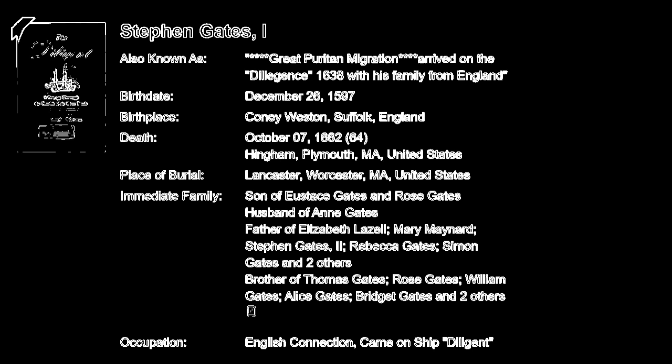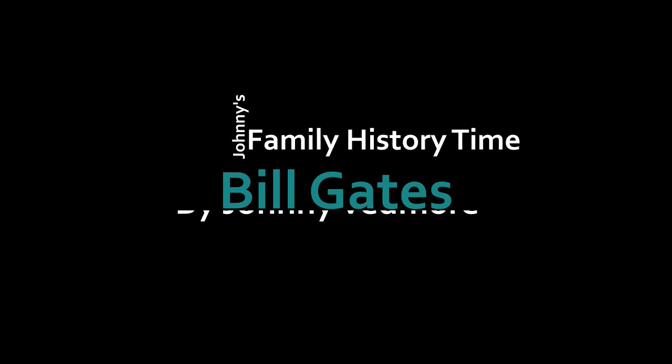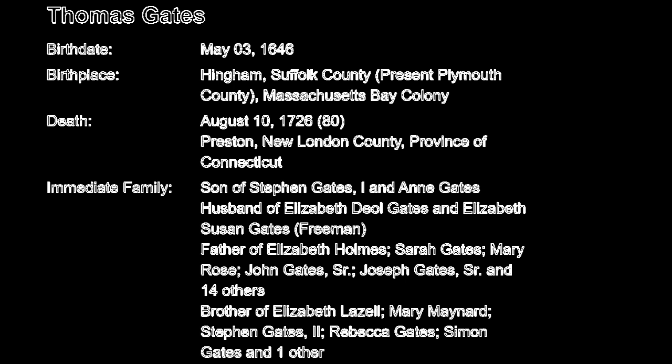The Gates family would at first settle in Cambridge, Massachusetts, where Stephen Gates I would eventually die on the 29th of September 1662. Stephen and his wife Anneve, who was also from Coney Western, had seven children together — two of them, Rebecca and Isaac, had died in England before reaching six years of age. The others were Mary Adele, Elizabeth, Stephen, Thomas, and Simon. We're going to follow Thomas Gates, who was born sometime before the 3rd of May 1646.